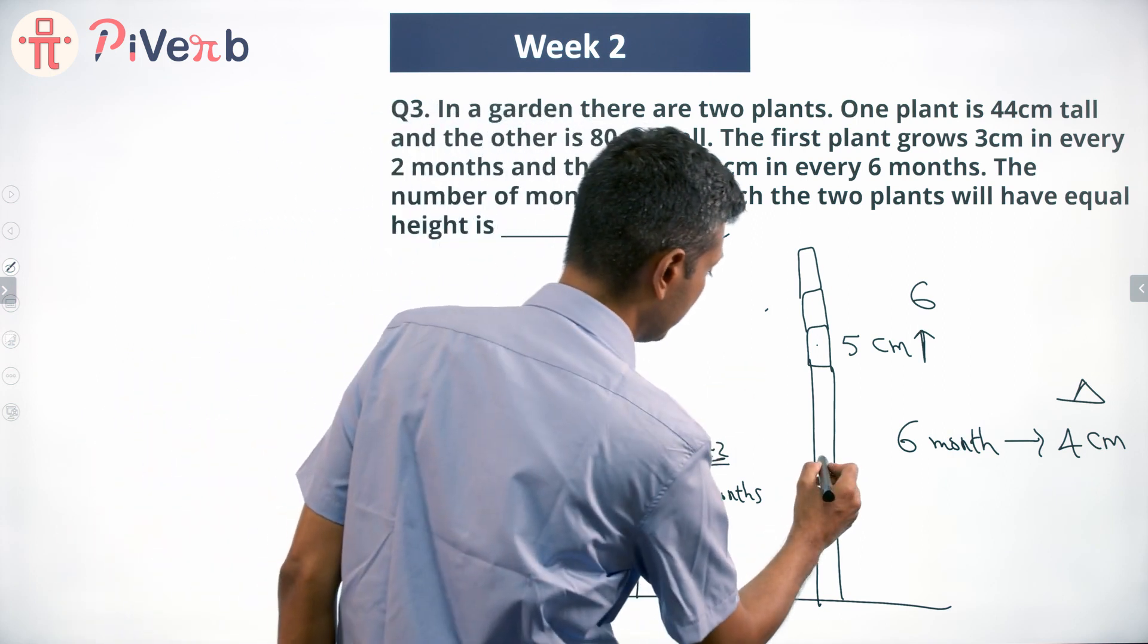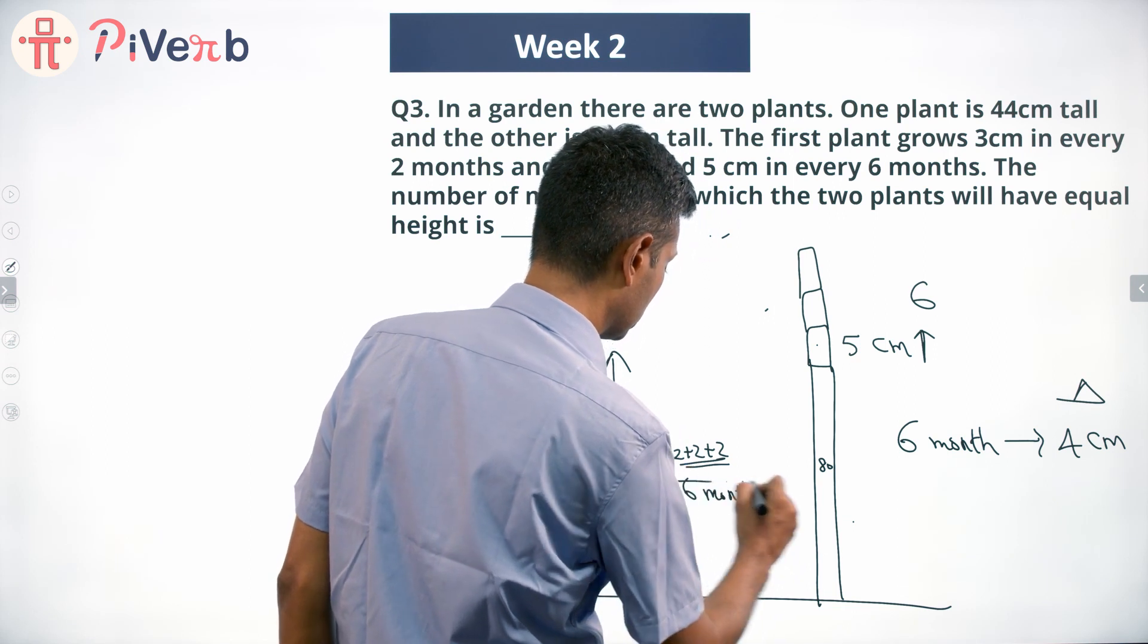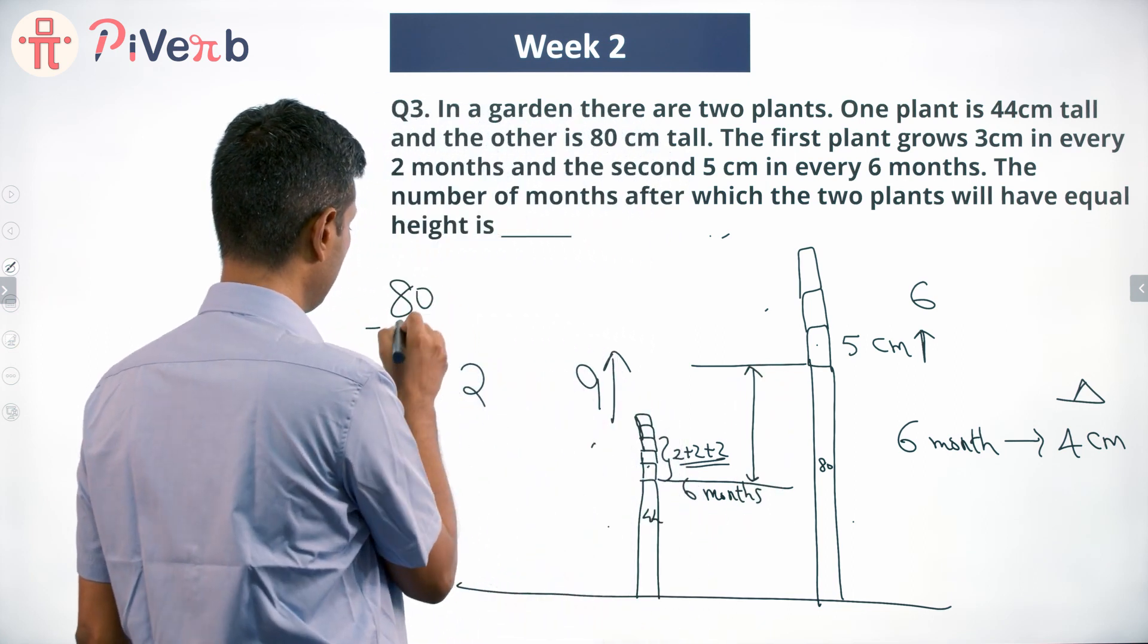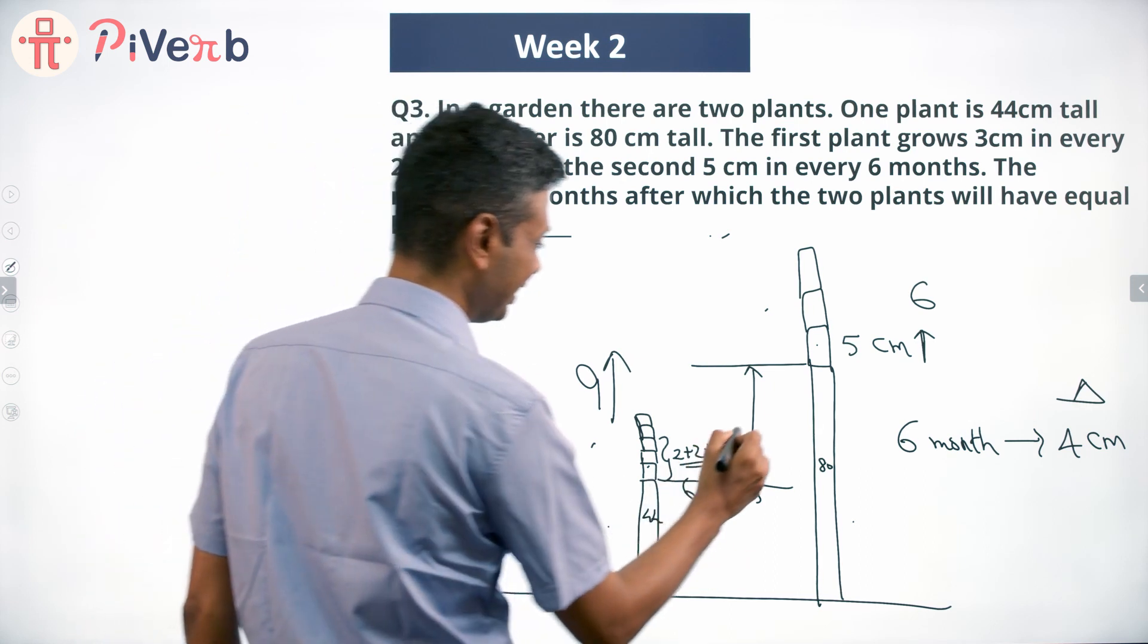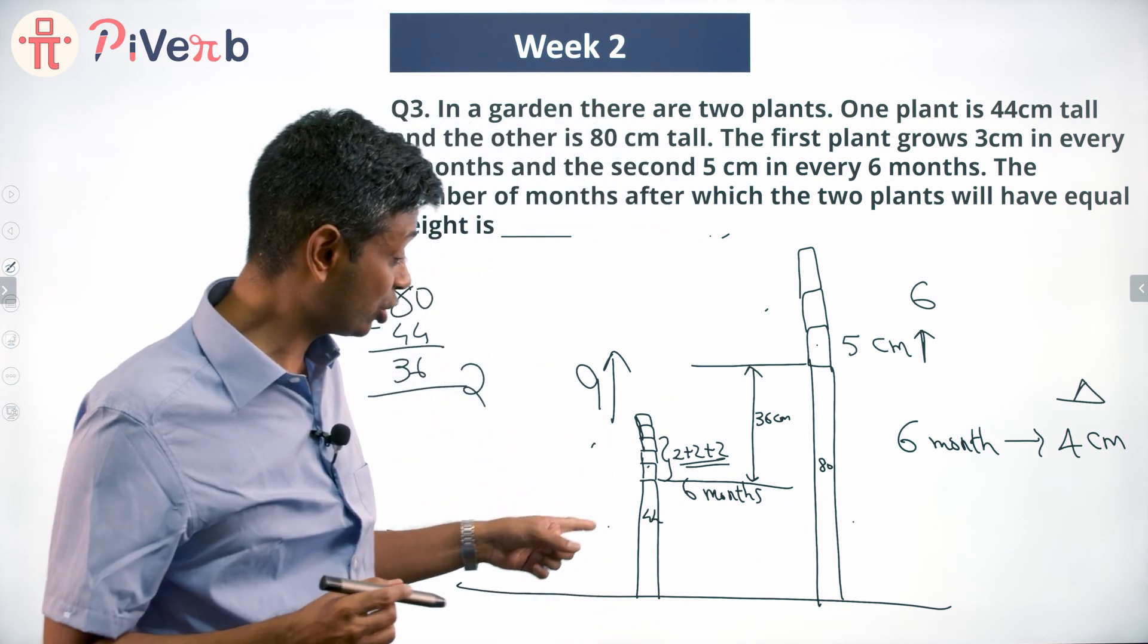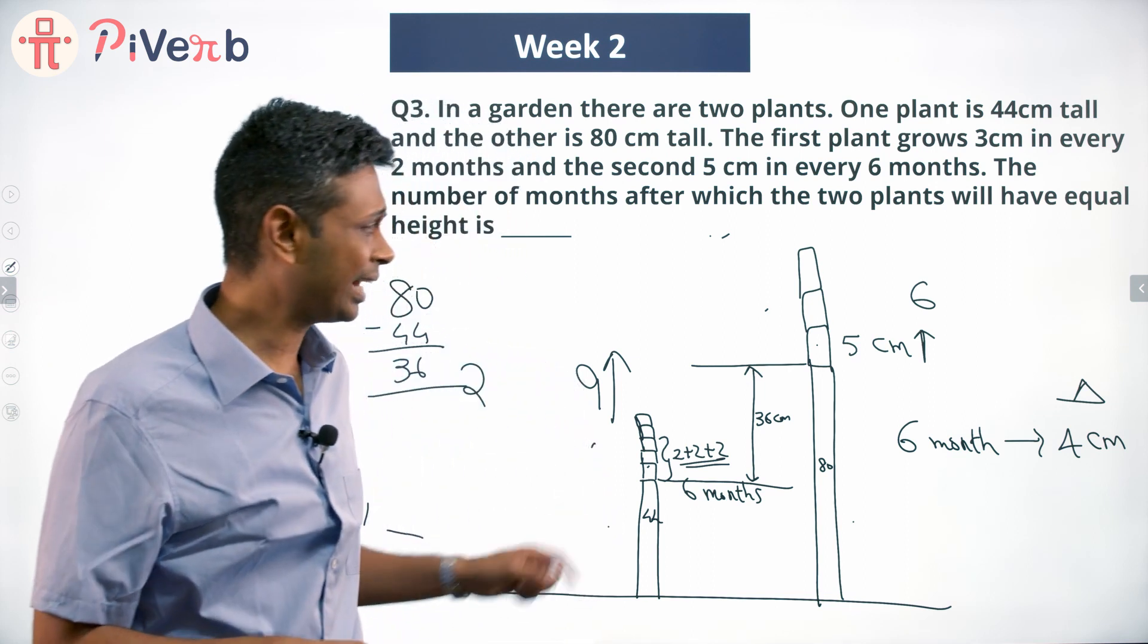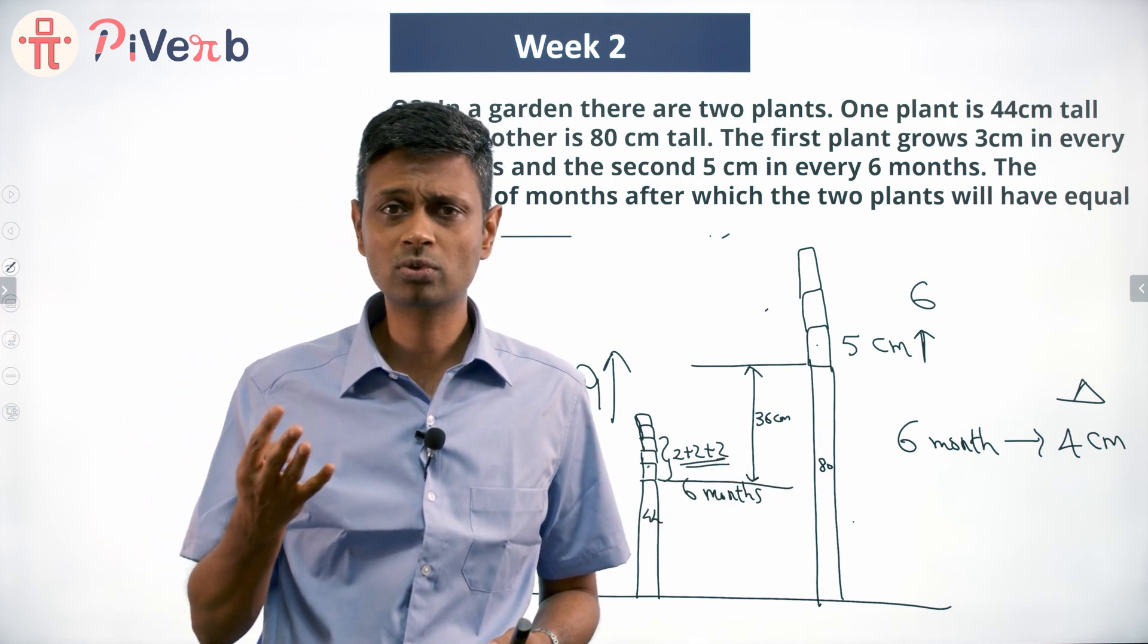The starting point here is 80, starting point here is 44, or the difference between these two is 80 minus 44. What is 80 minus 44? 80 minus 40 is 40, 80 minus 44 is 36. The difference between these two is 36 centimeters. This shorter but faster growing plant has to catch up. It catches up 4 centimeters every 6 months.